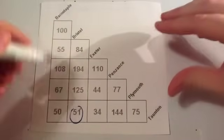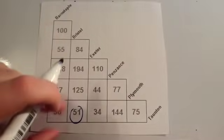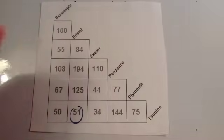That means that Bristol and Taunton, according to this diagram, are 51 miles apart. So that's the first question done. The answer would be 51.